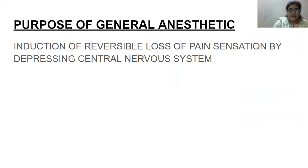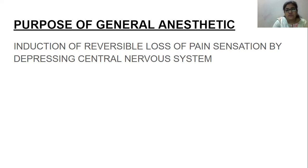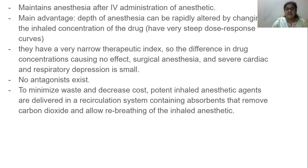The purpose of general anesthetics is to put the brain into a depressive mode — we don't want it to be excited. We want this mechanism to be reversible, returning to normal function once the surgical operation is over. The major purpose is induction of reversible loss of pain sensation by depressing the CNS.